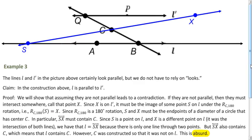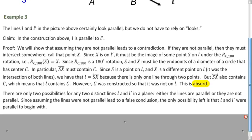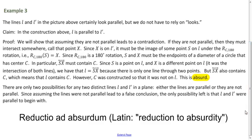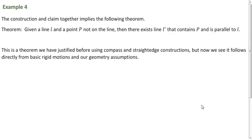We call that absurd. In Latin, this type of proof is called reductio ad absurdum — literally, reduction to absurdity. There are only two possibilities: the lines are parallel or they're not. Since we've shown the second is false, the first must be true. We've now shown that given line L and external point P, there exists a line L prime through P parallel to L.